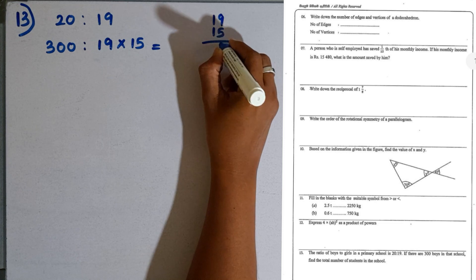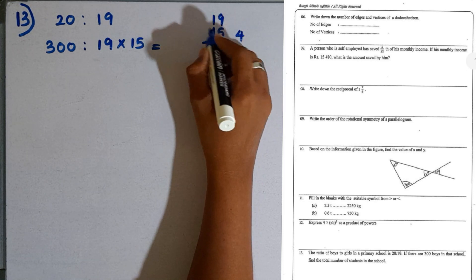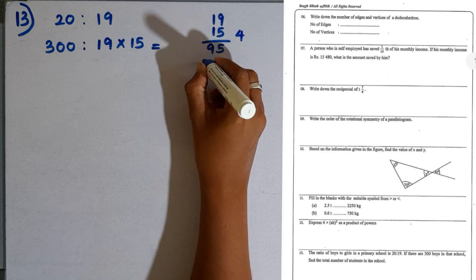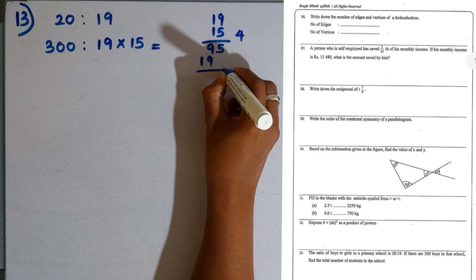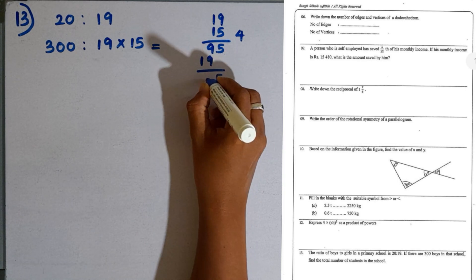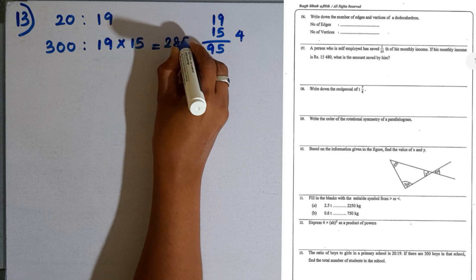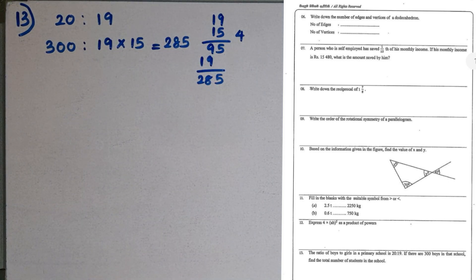If you multiply 19 by 15: 5 times 9 is 45, carry 4. 5 times 1 is 5, 5 plus 4 is 9. That gives 95. Then adding gives 285. So there are 285 girls in that school according to the ratio.